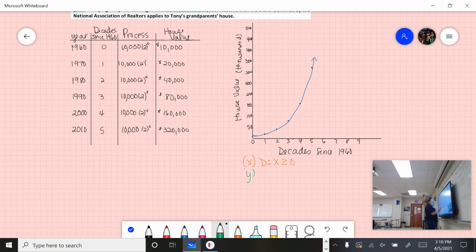Range is our y values. So for our range, again, our range starts at $10,000. There's no indication that this house stops gaining value, so our y value is going to start at $10,000 but keep going from there. So y is greater than or equal to $10,000.